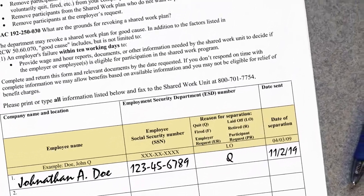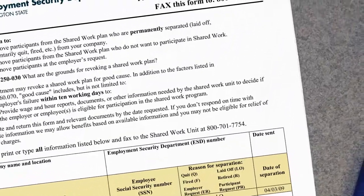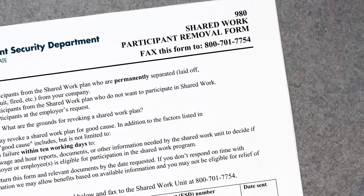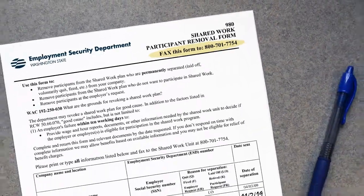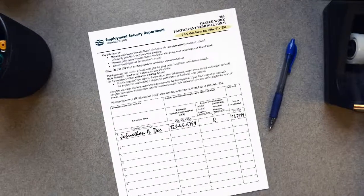Now that the form is complete, fax it to the number in the upper right hand corner. And that's it — that's the shared work participant removal form.